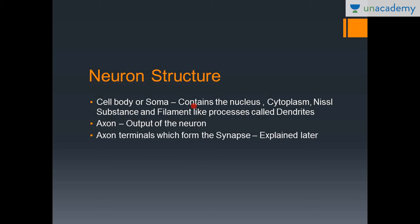The neuron contains a cell body or soma, which contains the nucleus, cytoplasm, Nissl substance, and filament-like processes called dendrites. The longest process of the cell body is called the axon, and the axon terminals are the terminal branches of the axon that form the synapse.